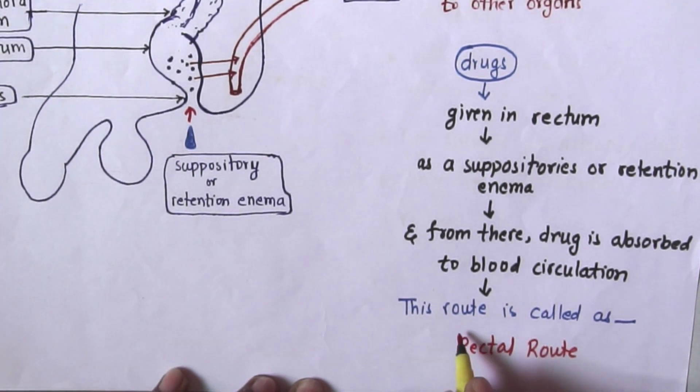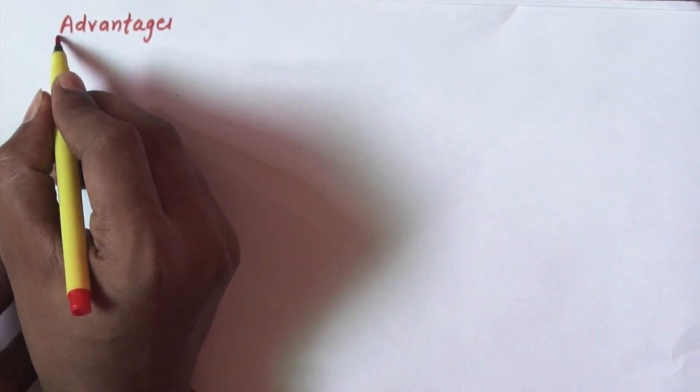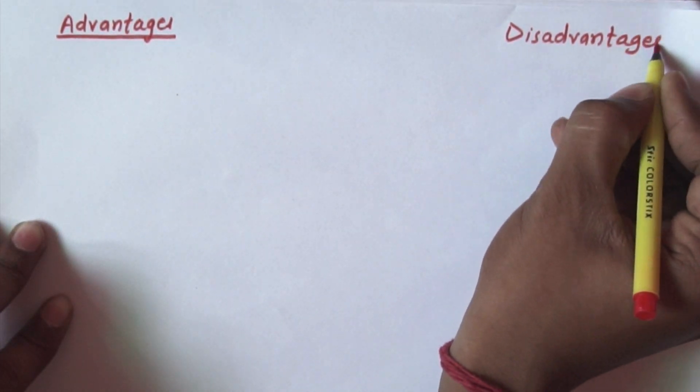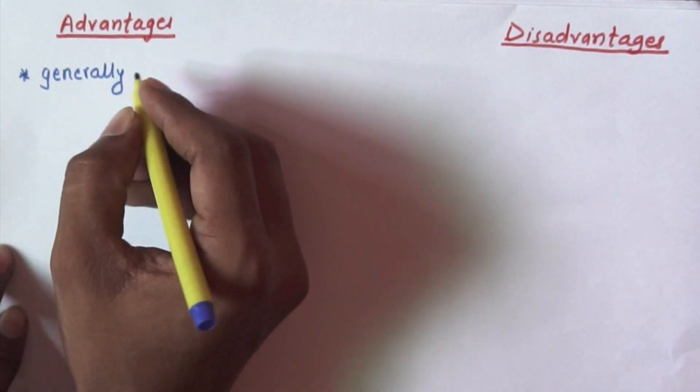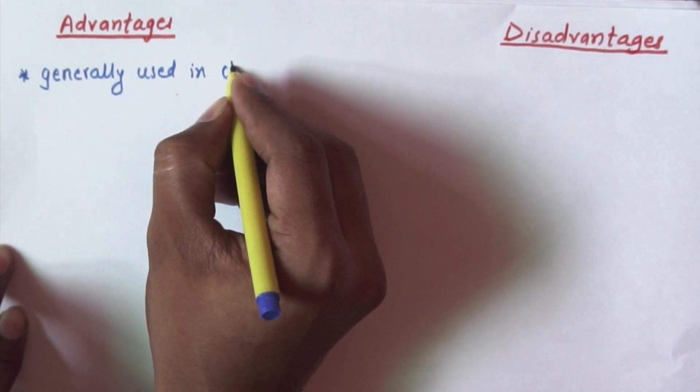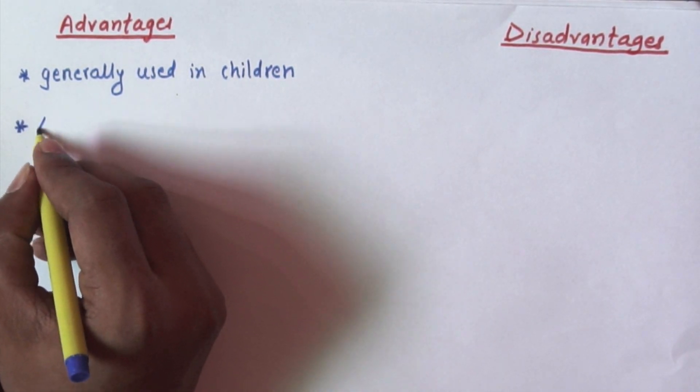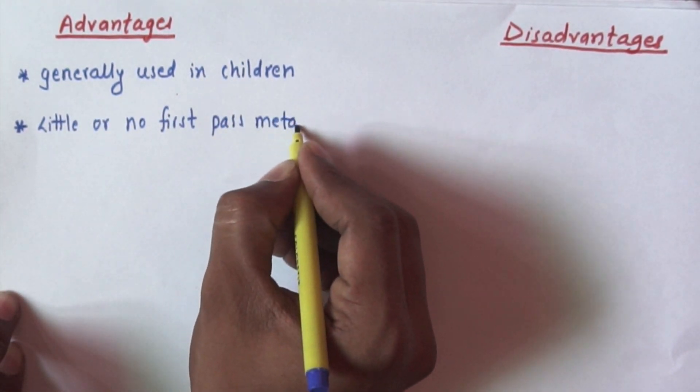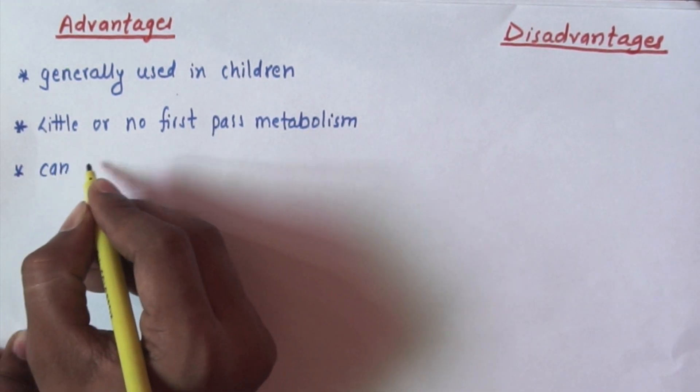Now we will see the advantage and disadvantage of rectal route. Coming to the advantages, it is generally used in children. There will be little or no first-pass metabolism. Metabolism will be there, we are going to discuss in latter part of this lecture.